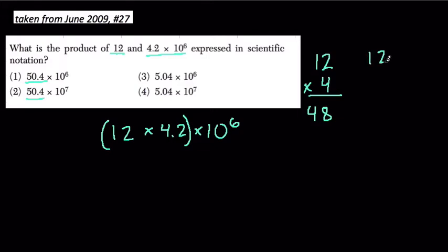But we're multiplying 12 by 4.2. So if I think of 12 times 0.2, well, this is just like 2 times 12, which is 24.